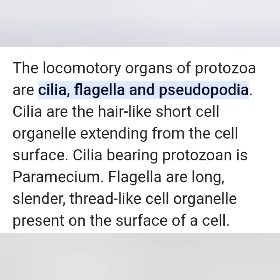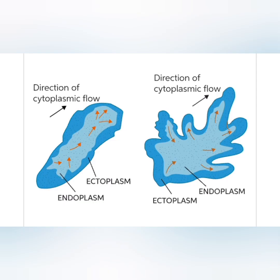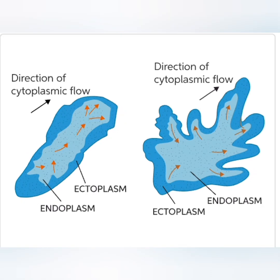Protozoa move in the environment in 3 different ways: amoeboid movement, flagella, and ciliary movement.